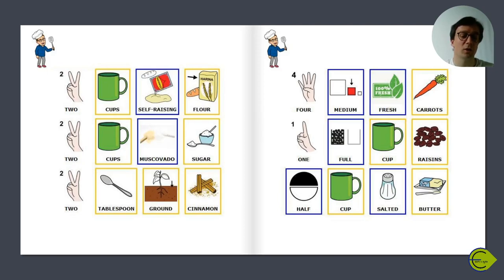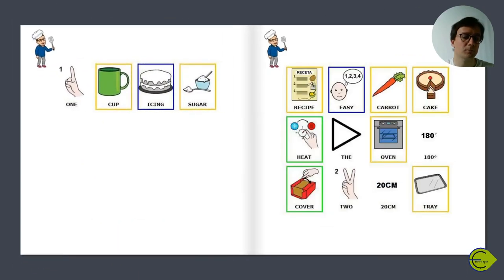1.5 cup salted butter, 1 cup icing sugar. Recipe Easy Carrot Cake. Heat the oven 180 degrees. Cover two 20 cm trays with some baking parchment.